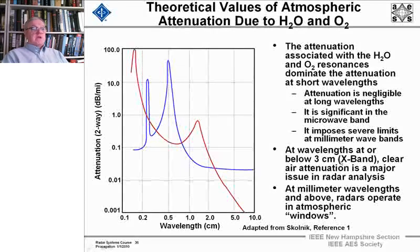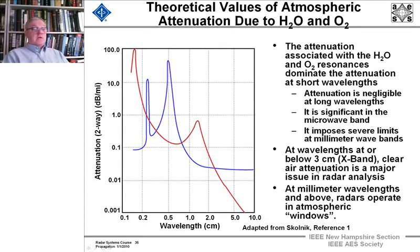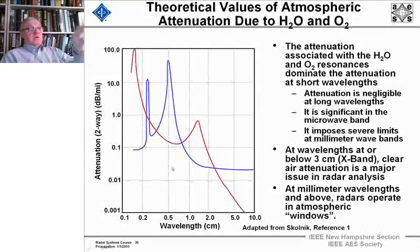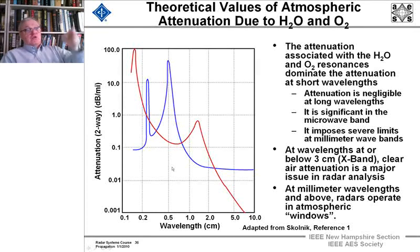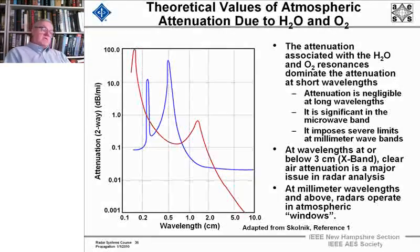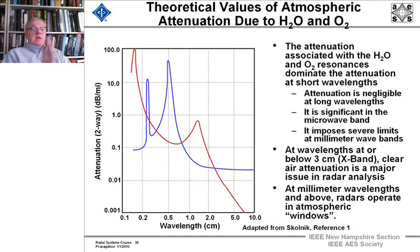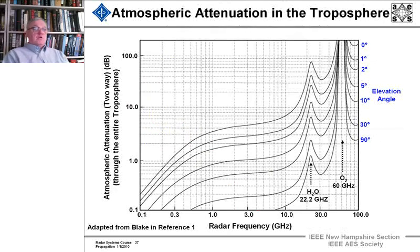At wavelengths at 3 centimeters or below, clear air attenuation is the major issue when you're designing a radar. And when you're in the millimeter wave area, there are windows that you can operate in where these conditions will be dips in attenuation, and very strong dips. So you could build millimeter wave radars at 35 gigahertz and 95 with significant attenuation, but at 60 gigahertz, as you'll see in a minute, there's massive attenuation.